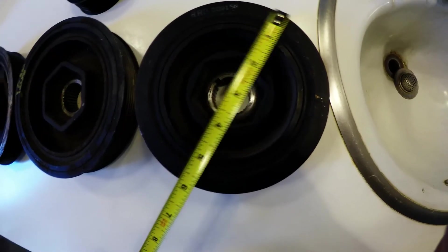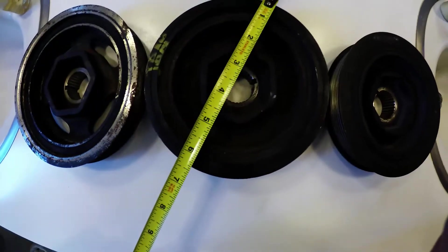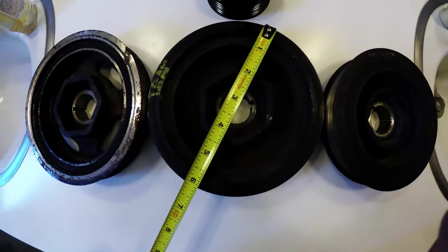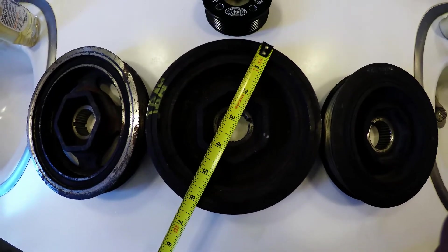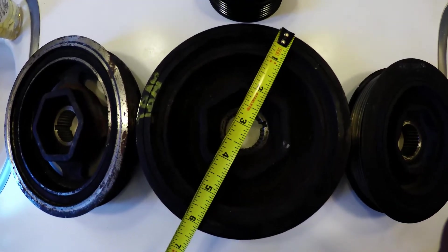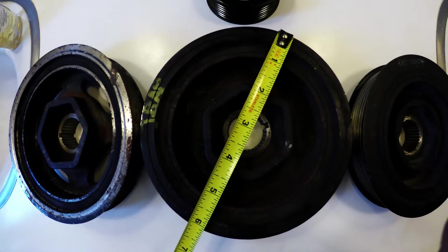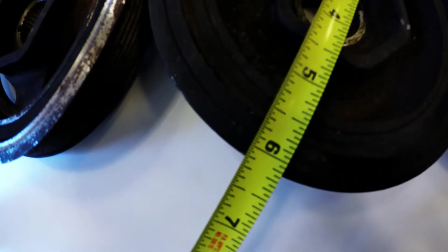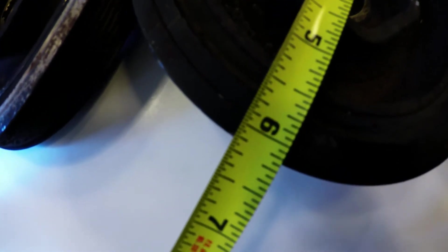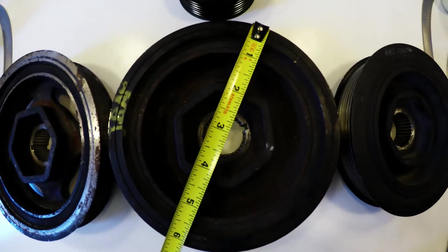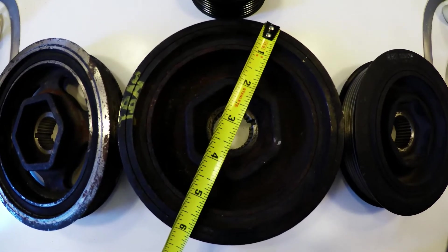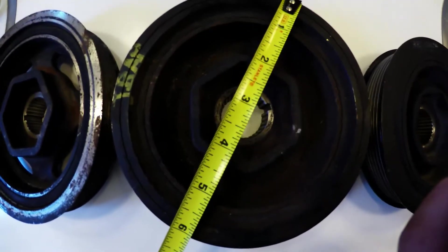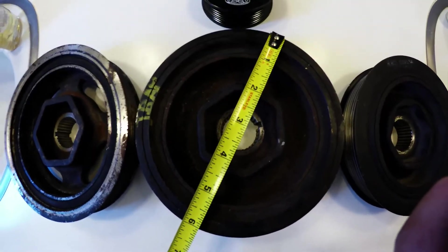So 5.75. Over here we have the K24 A2, this one is off of a 2007 Acura TSX USDM. Okay, so this one measures at 6.25 inches outer diameter. So I'm guessing 2004 to 2008 model should come with this size pulley.